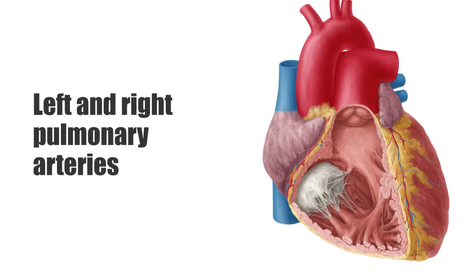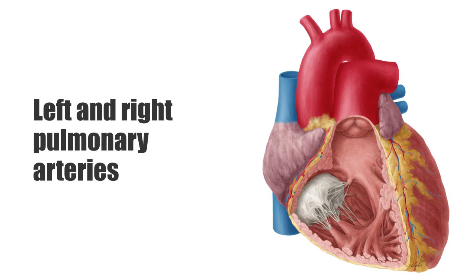The main pulmonary artery originates at the pulmonary valve of the right ventricle. Blood leaves the right ventricle, enters by way of the pulmonary valve, the main pulmonary artery, which then branches off into the left and right pulmonary arteries.